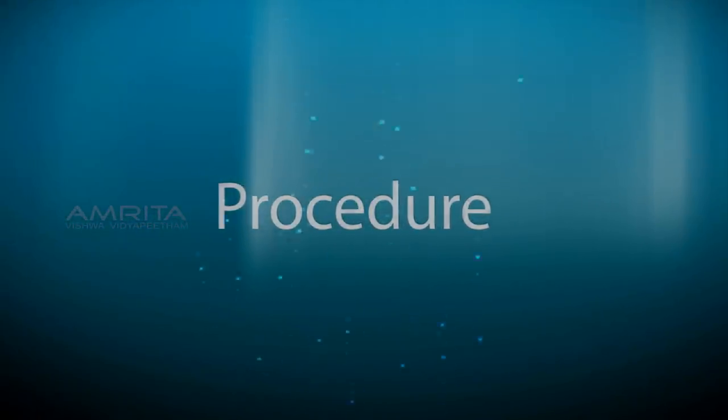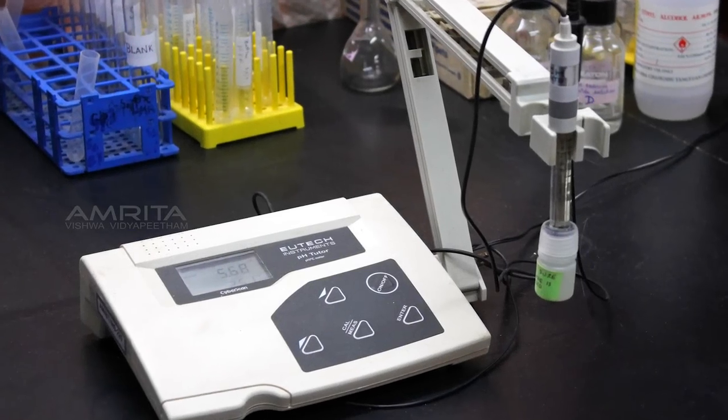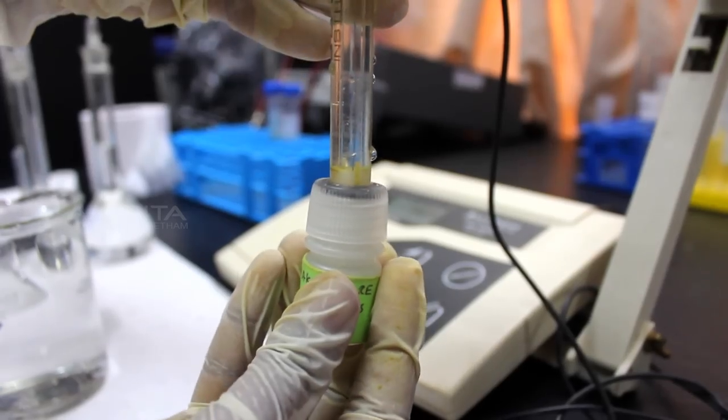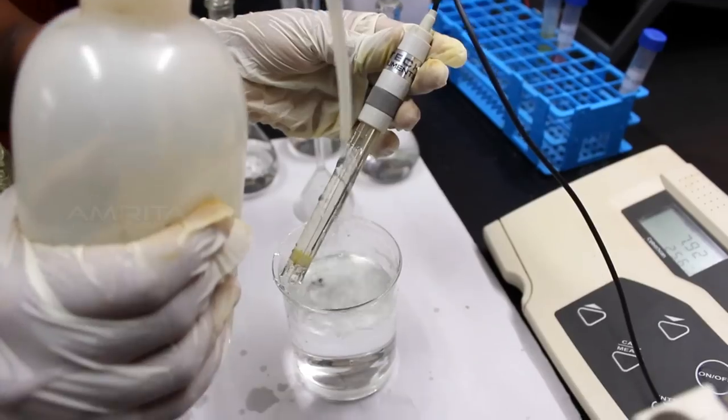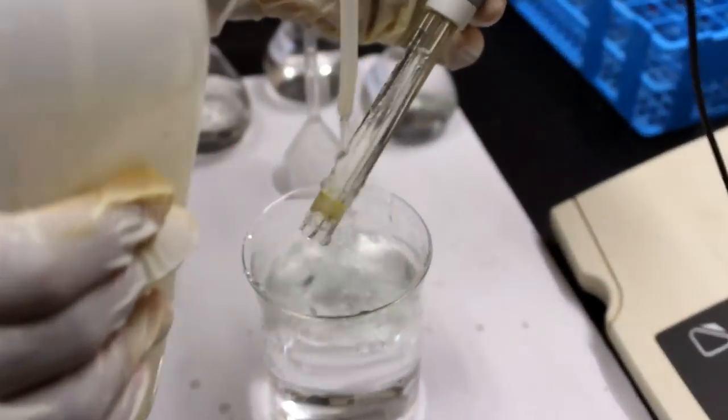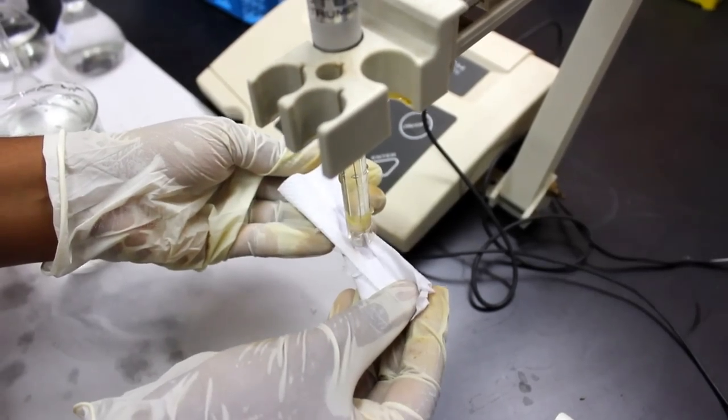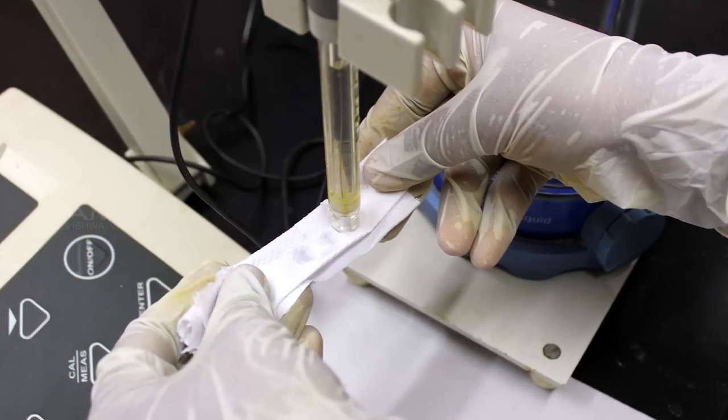Procedure: First calibrate the pH meter using the standard pH buffer solution. Remove the cap of the pH electrode and wash the electrode with distilled water. Now place the electrode back on the pH meter stand and wipe the bulb of the electrode using tissue paper to remove the excess water.